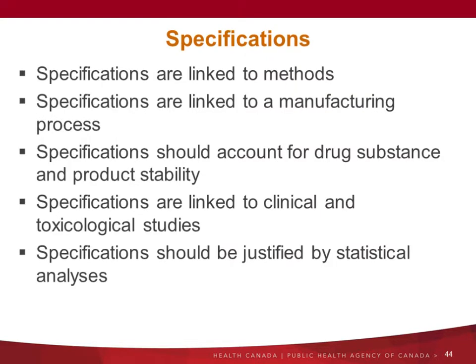The specs are linked to the methods — you need to account for the variability of the methods. They are also linked to the manufacturing process, should account for drug substance and drug product stability, and are linked to the clinical and toxicology data. They should be justified by statistical analysis. The acceptance criteria should be established and justified based on data obtained from lots used in preclinical and/or clinical data. If a sponsor would like to propose something outside of clinical or preclinical experience, regulators will ask for a strong justification — from toxicology studies or literature.